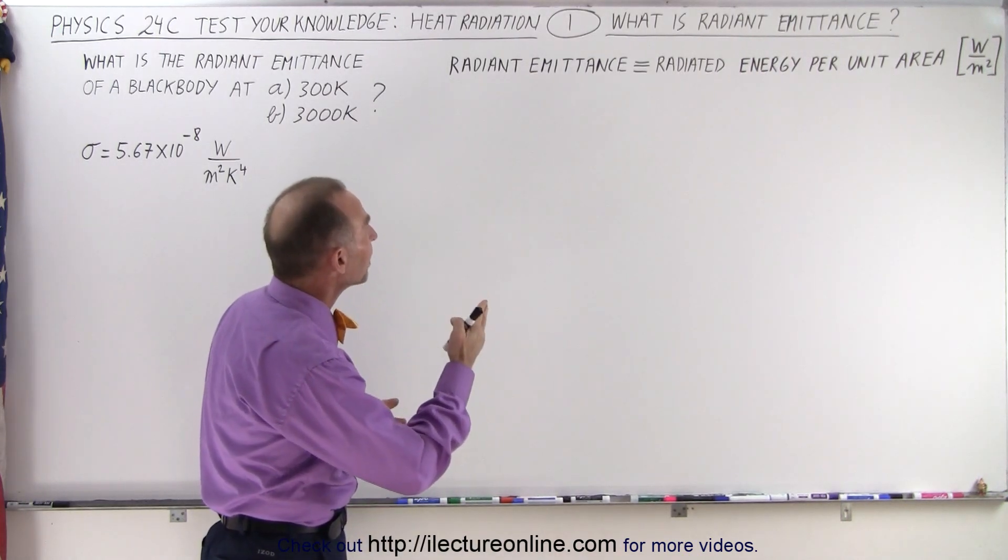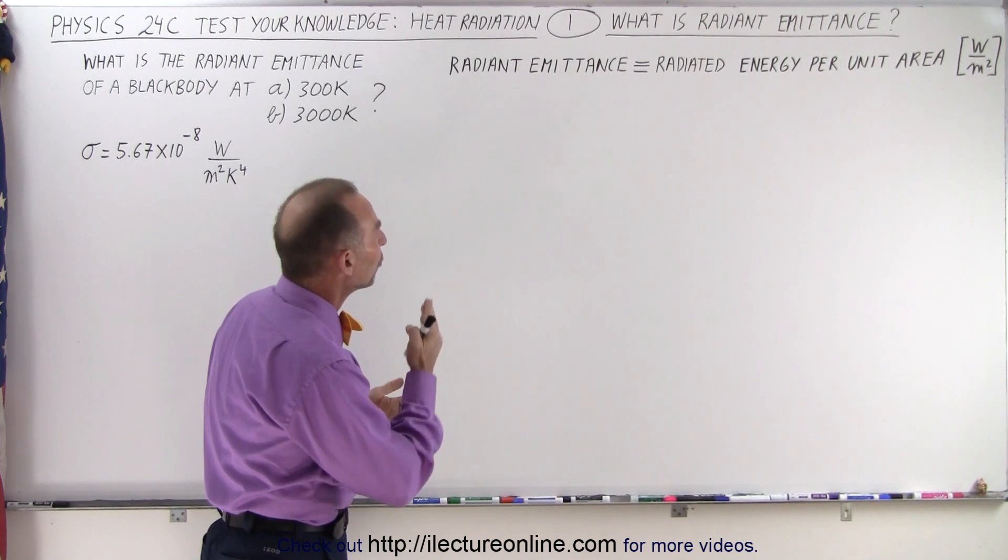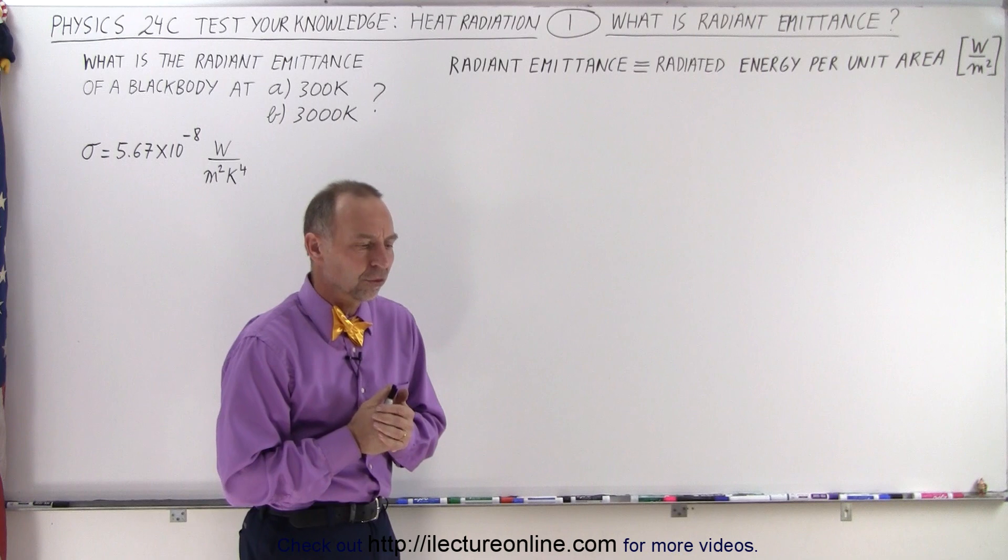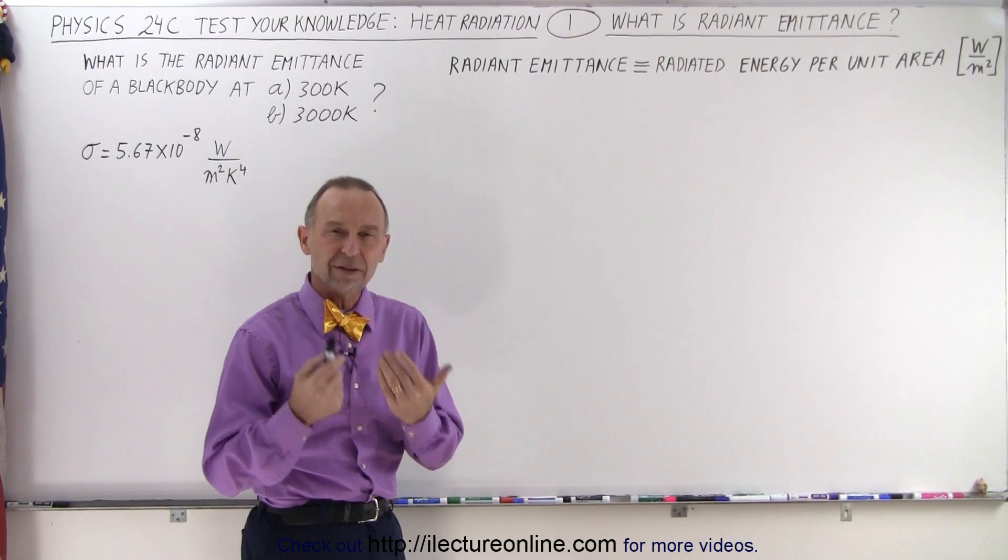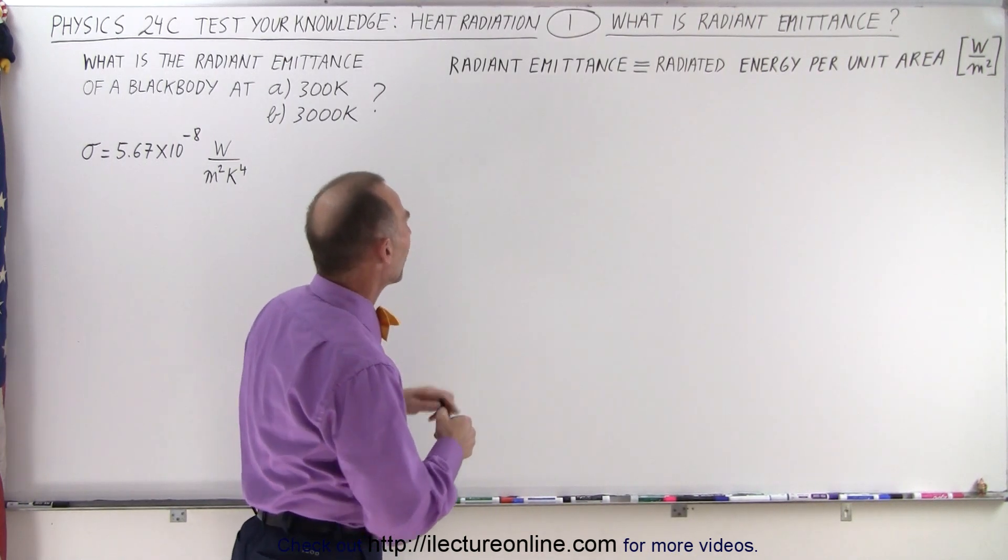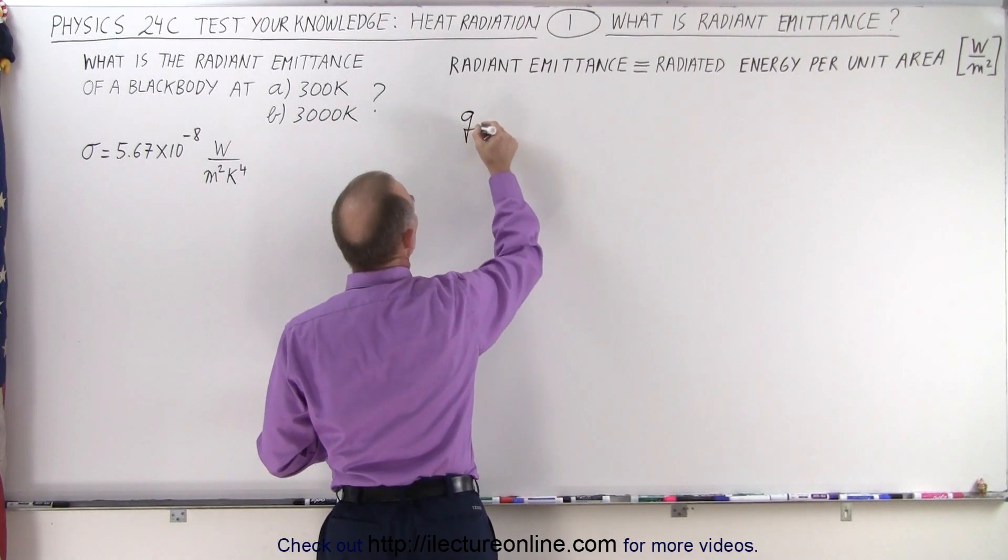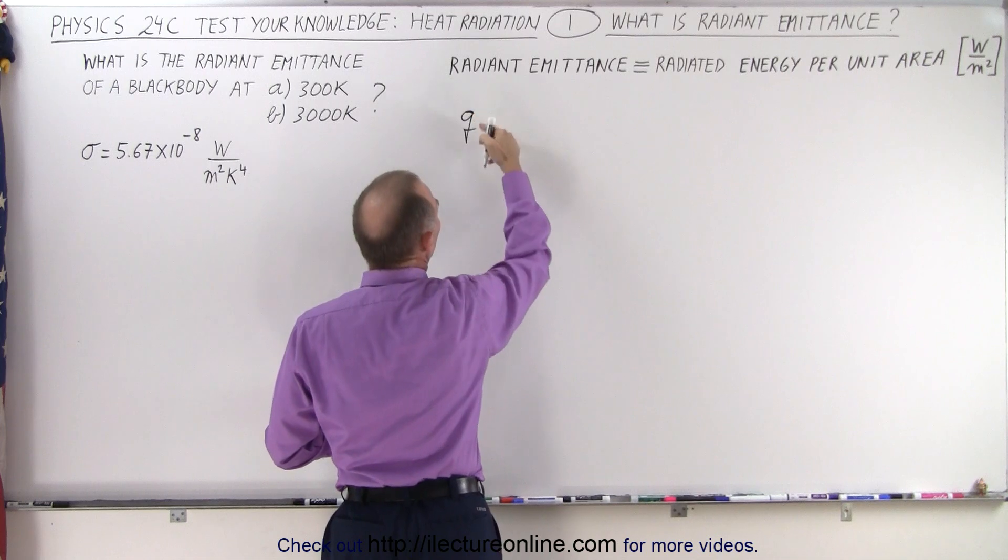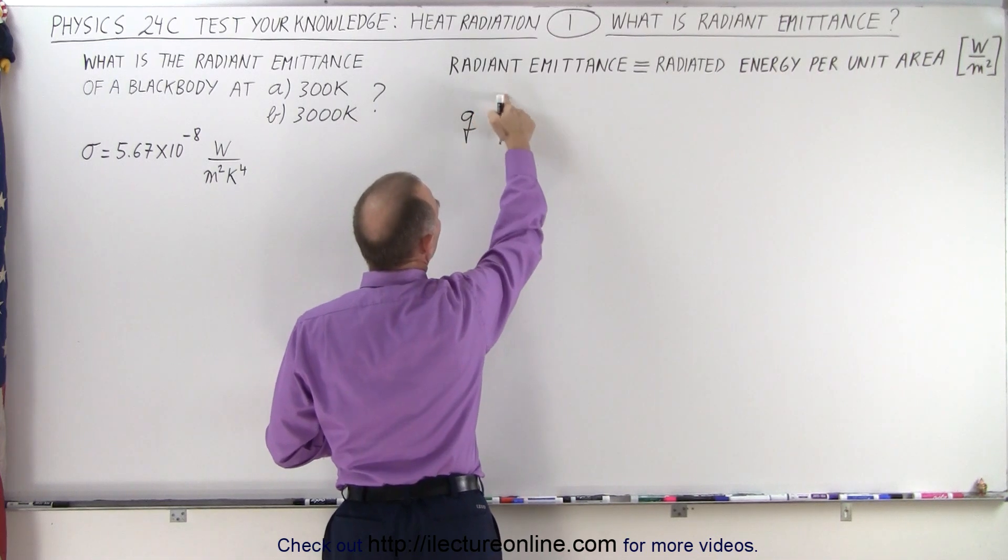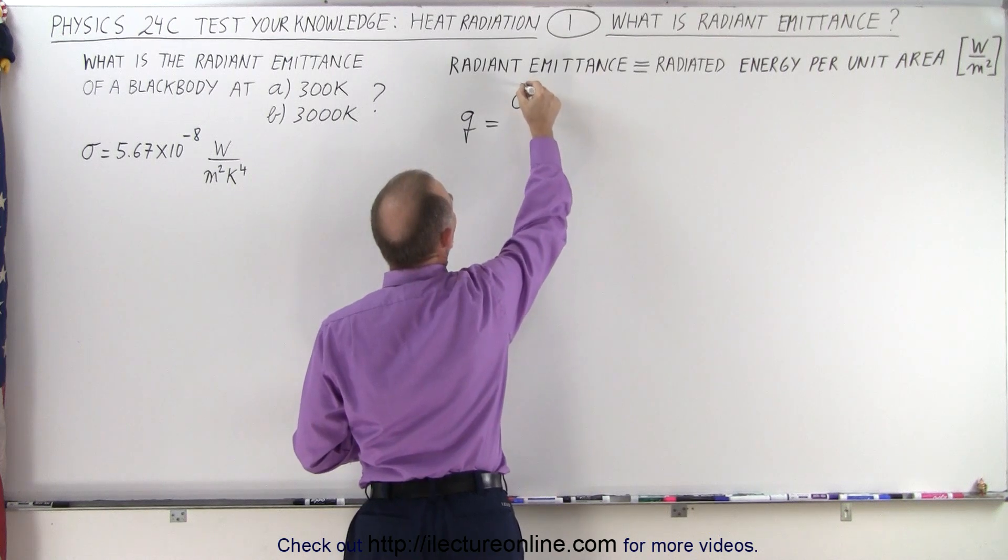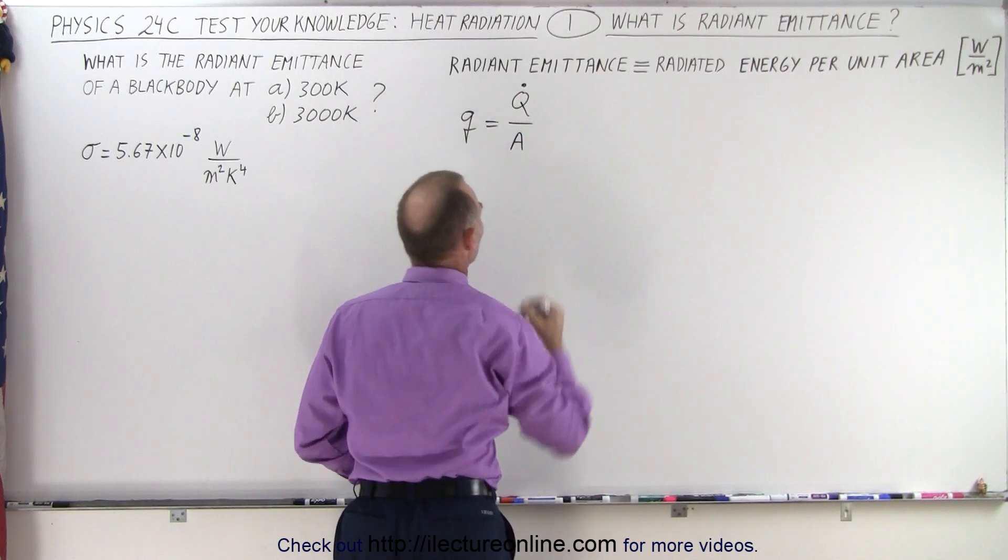So radiant emittance by definition is the radiated energy per unit area. When we're dealing with radiated energy we're thinking about Stefan-Boltzmann's law. We can define it such that Q, the variable used for radiant emittance, is equal to the ratio of capital Q dot divided by the cross-sectional area.